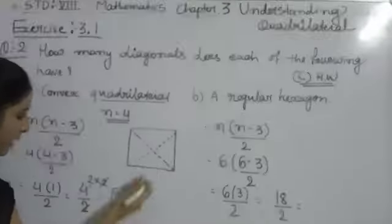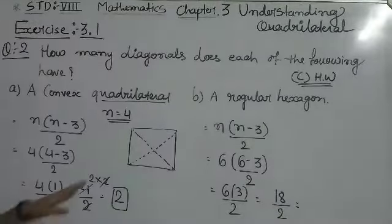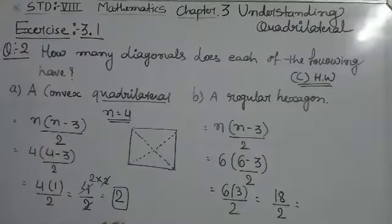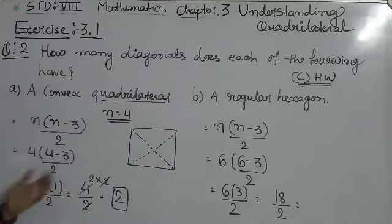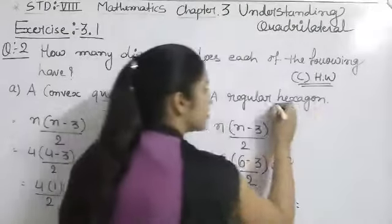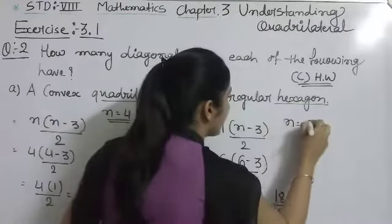Now move on to the second one. This is a regular hexagon. Hexagon has 6 sides, so n is 6.